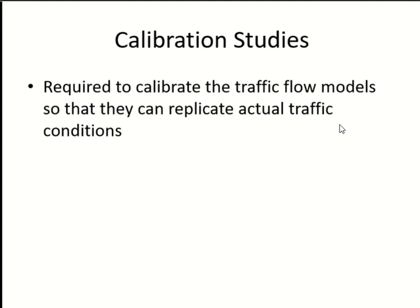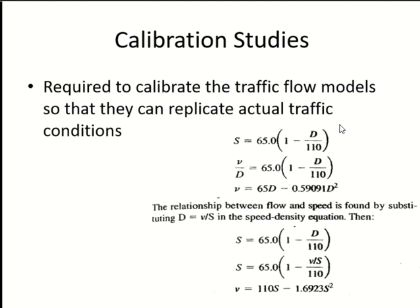Then we have calibration studies. We did one in the last chapter — deriving equations and making relationships between variables. To know how one parameter affects another, we collect data, look at the graph, and derive equations. Doing all this is called a calibration study, where you collect data and find the relationship between different parameters, including making graphs and equations.